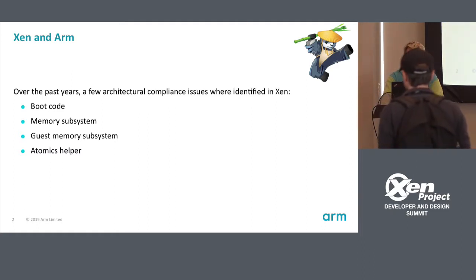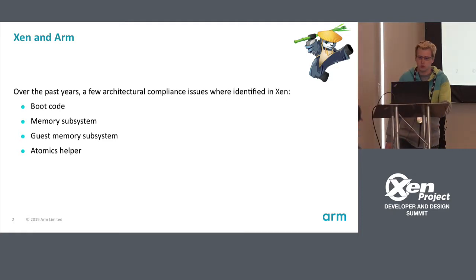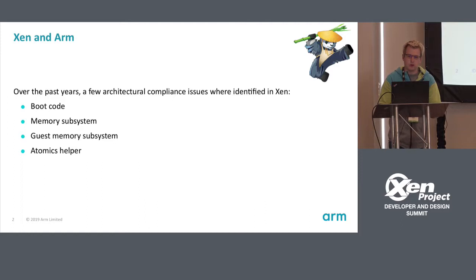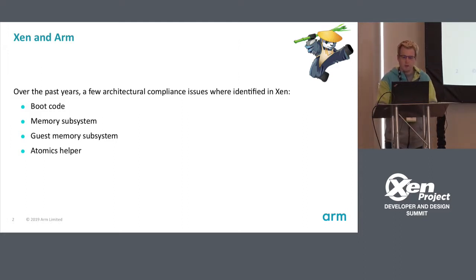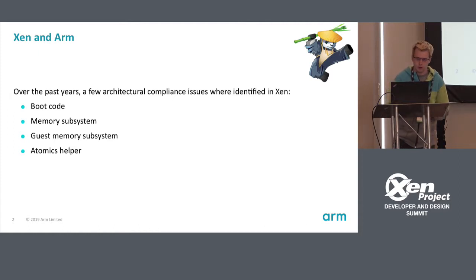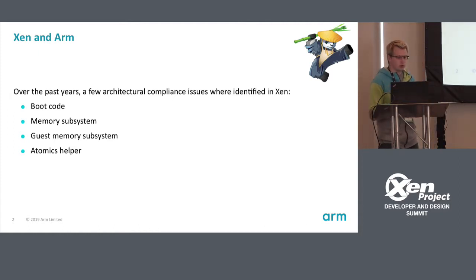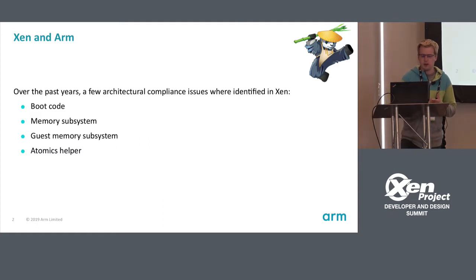Over the past years, we noticed a few places in Xen where it's not very compliant with the architecture — with the ARM ARM, which is also the Bible for ARM. The main places where issues were identified were the boot code, memory subsystems, guest memory subsystems, and the MMU helper.